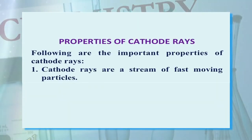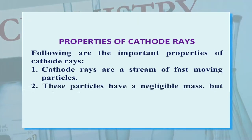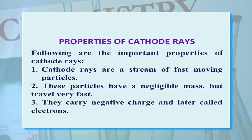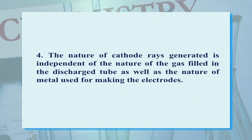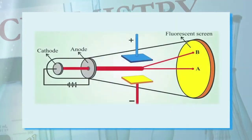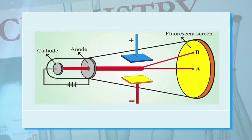Properties of cathode rays: First, cathode rays are a stream of fast-moving particles. These particles have negligible mass but travel very fast. They carry negative charge and were later called electrons. The nature of cathode rays generated is independent of the nature of the gas filled in the discharge tube as well as the nature of the metal used for making the electrodes. Cathode rays pass through an electric field and their deflection is shown in the arrangement here.